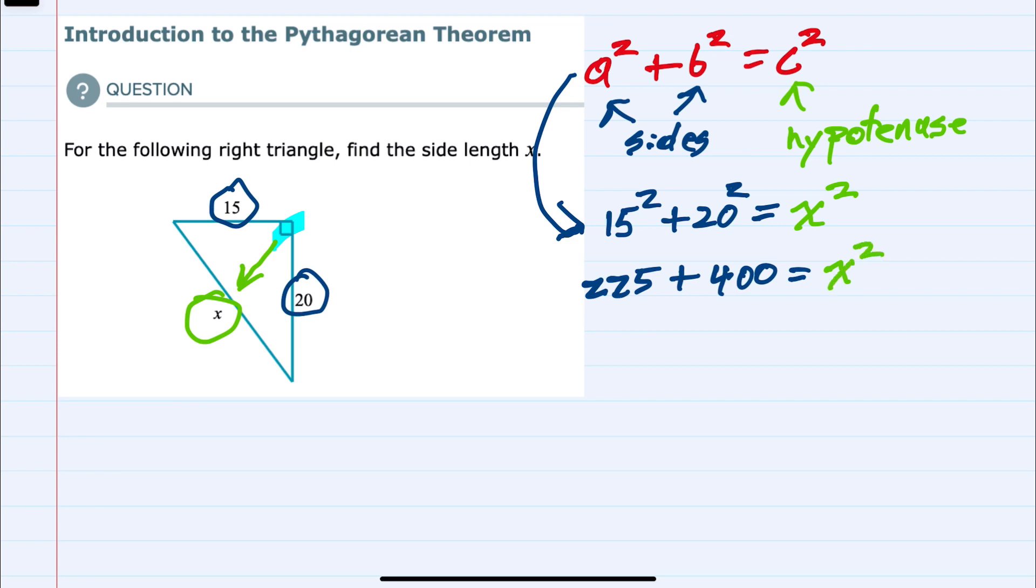I can add the numbers on the left. Since we just have 225 and 400 being added, that is 625 equals x squared.